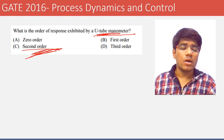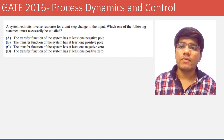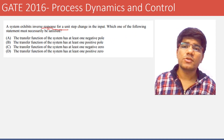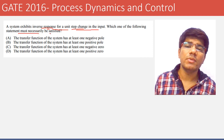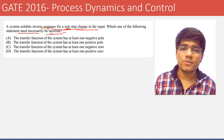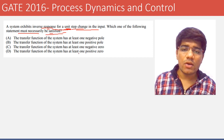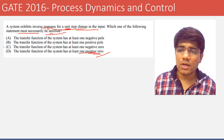The next question is about inverse response. For a unit step change in the input, which statement must necessarily be satisfied for inverse response? For inverse response, one of the zeros must be positive. So option D is the right answer for this question.